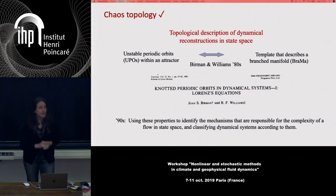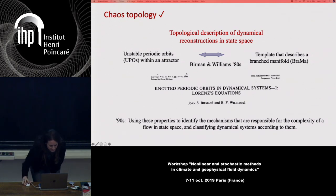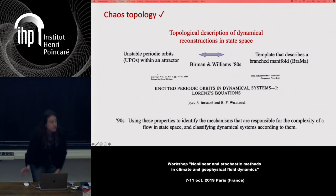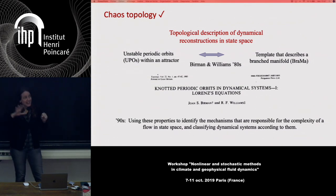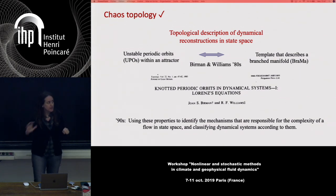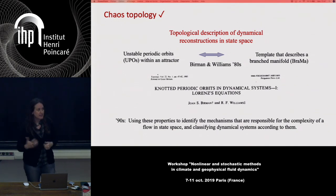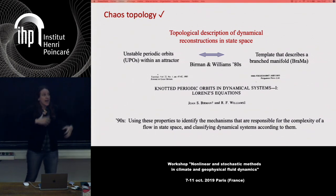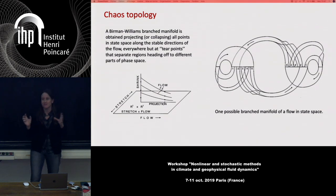In the 1980s, an 1983 paper in a review called Topology — 'Knotted Periodic Orbits in Dynamical Systems' — took the Lorenz equation as a starting point. In this paper, Birman and Williams, two mathematicians, provide a link between unstable periodic orbits within an attractor and a template that describes a branched manifold. In the 1990s, these properties were used thoroughly to identify the mechanisms responsible for the complexity of a flowing phase space and to classify dynamical systems according to them.